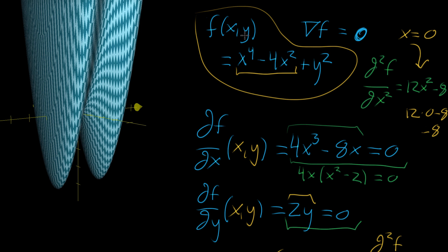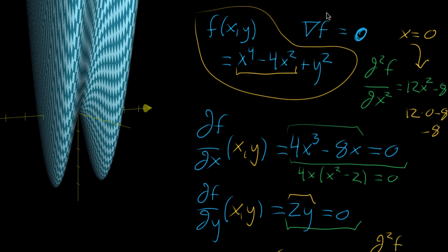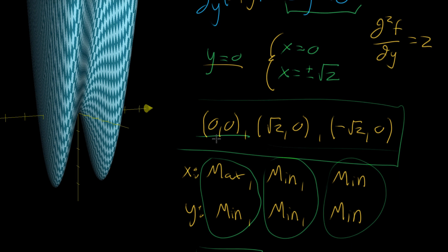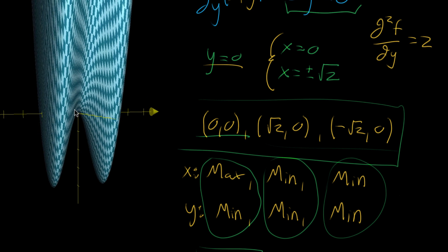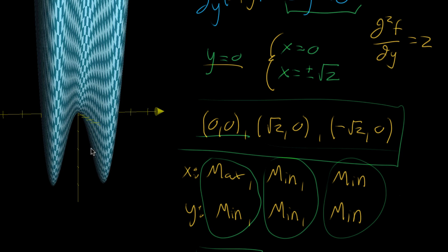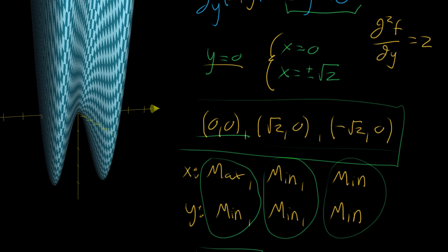In the last video, we took a look at the function f equals x to the fourth minus 4x squared plus y squared, which has the graph on the left. We looked for all points where the gradient is equal to zero, meaning both partial derivatives are equal to zero. We found three different points: the origin (0,0), and then (√2, 0) and (-√2, 0), which corresponds to the saddle point at the origin and two local minima.